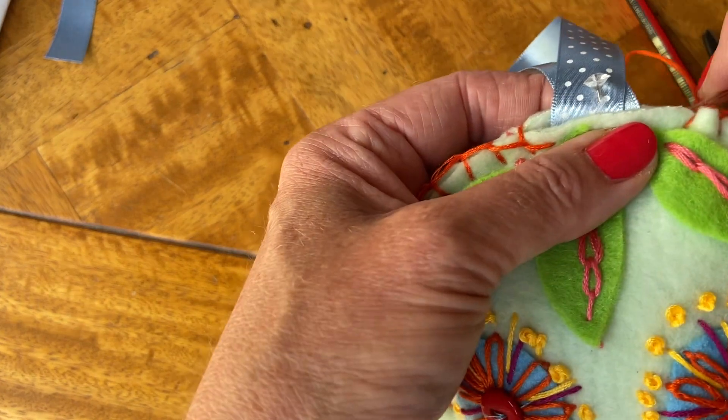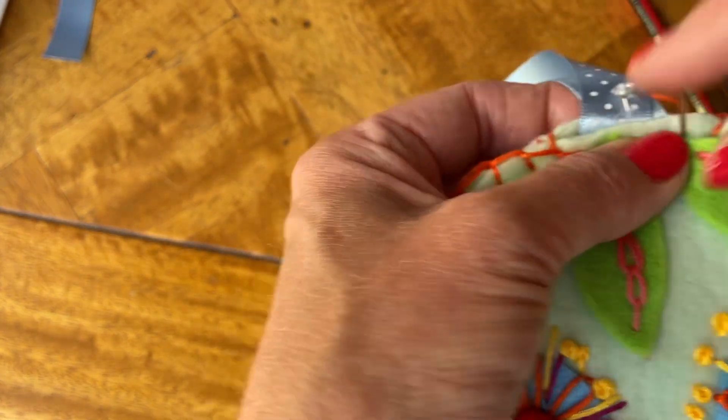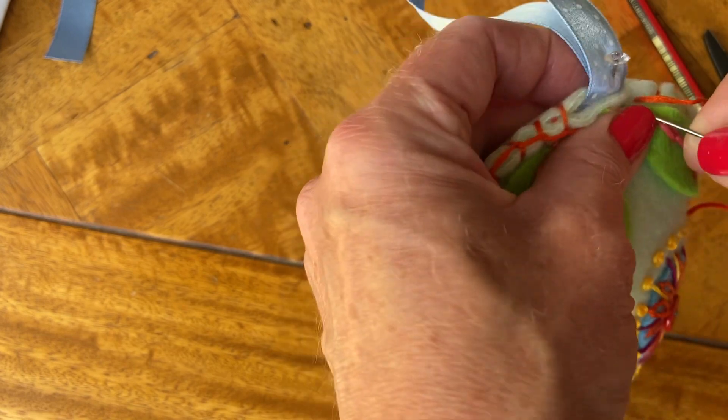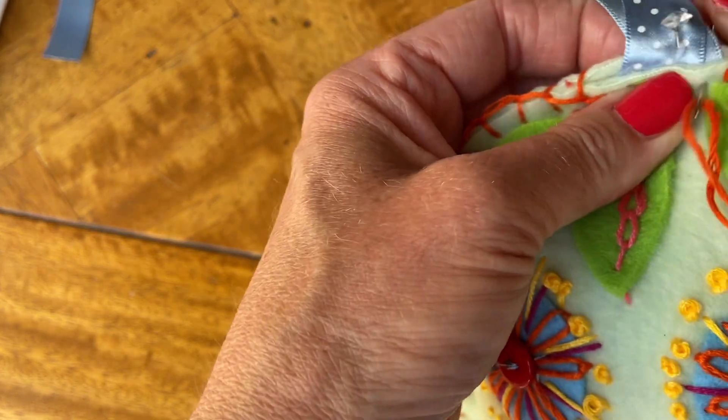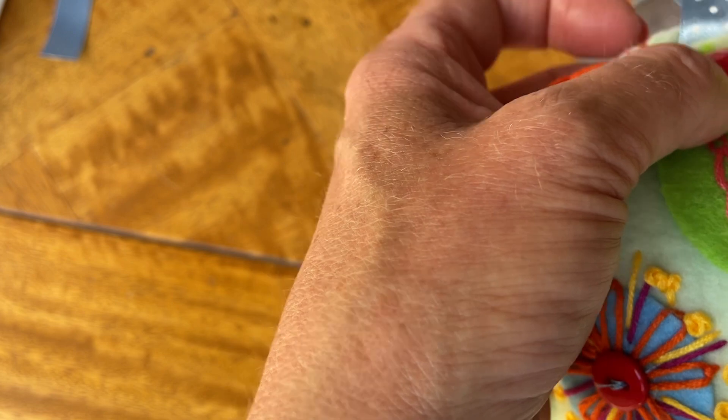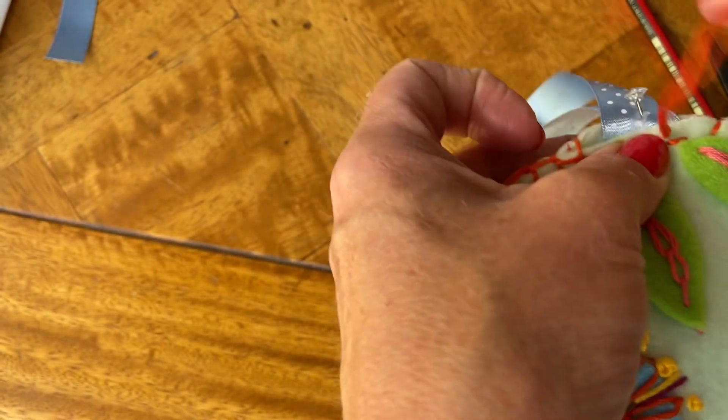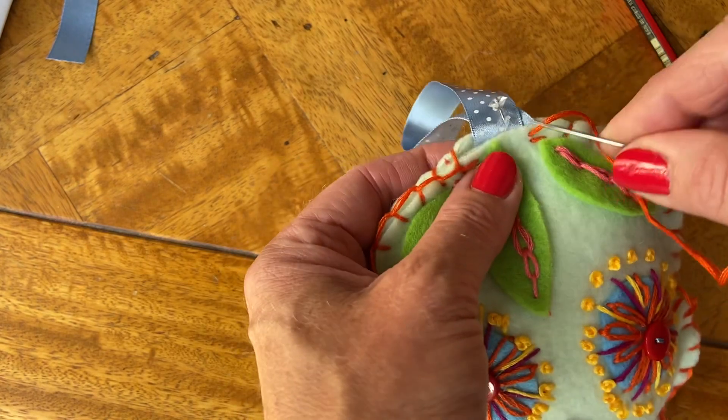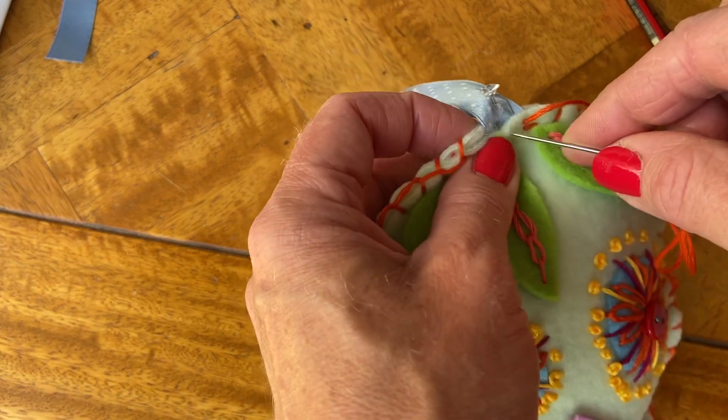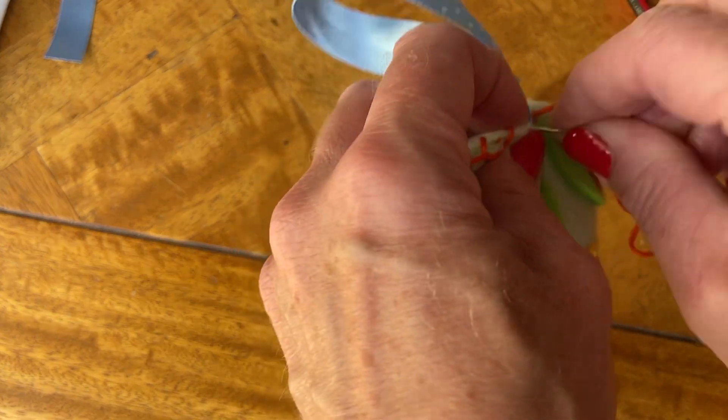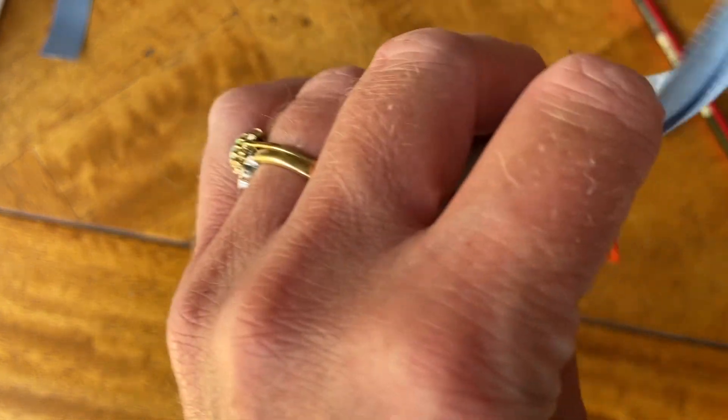And we're just going to do a little running stitch, so coming from the back, we're going to do a running stitch making sure that we're sewing through the ribbon back. You're going to really make sure that you've got a sharp needle for this one, as you're going through ribbon and two pieces of thread.